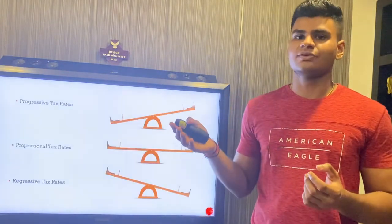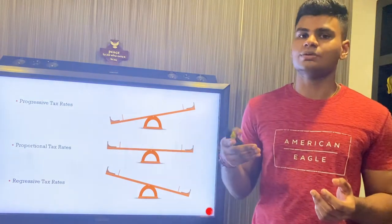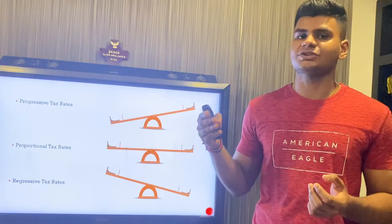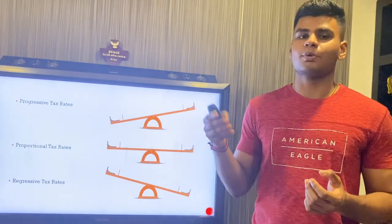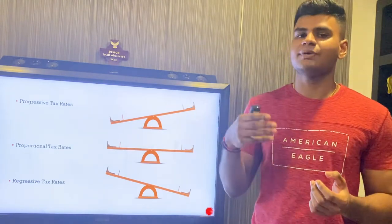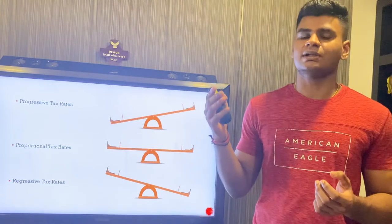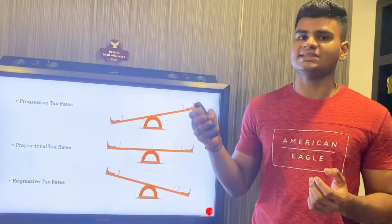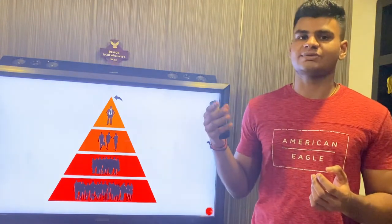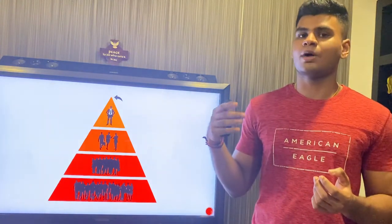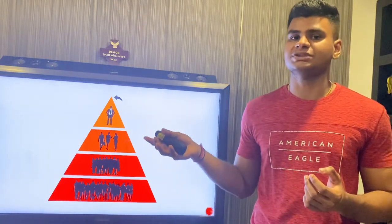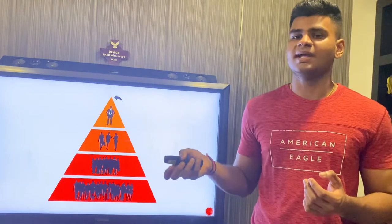Tax rates themselves can be categorized as progressive, proportional, or regressive. Progressive tax rates charge a higher percentage of income as income level increases. Proportional tax rates charge the same percentage regardless of income level. Regressive tax rates charge a higher percentage as income level decreases. The author argues that progressivity of tax rates, especially for well-off individuals beyond the top 1% and around the 0.5% to 0.1% range, has declined over time, and this should not be the case.